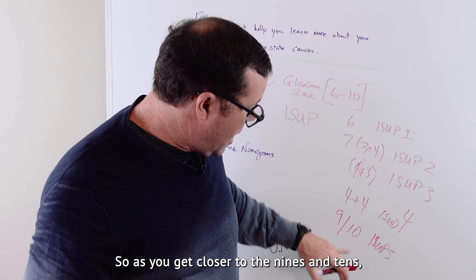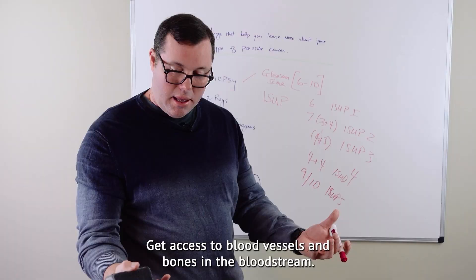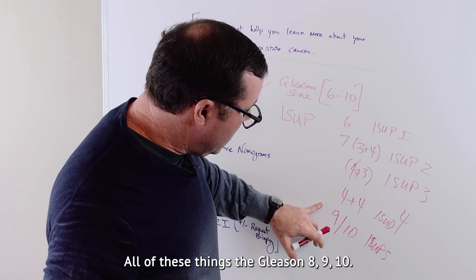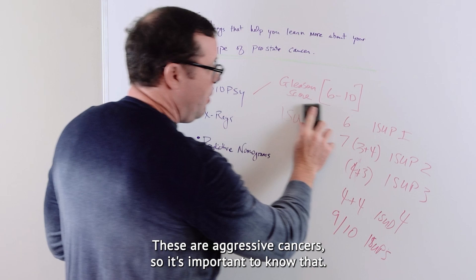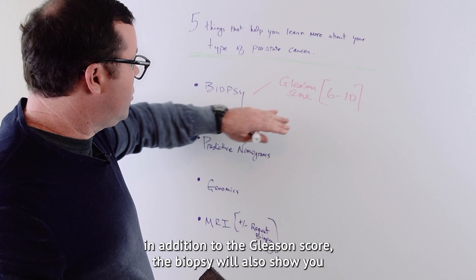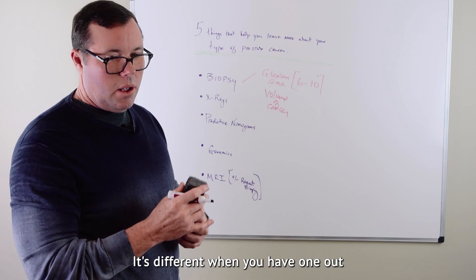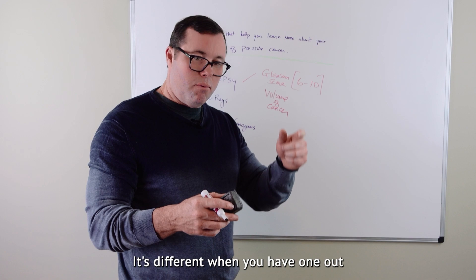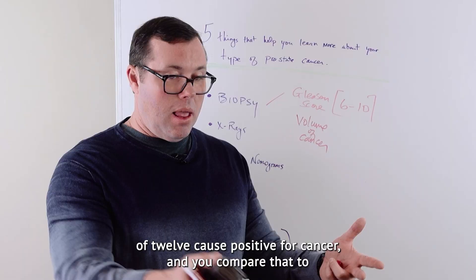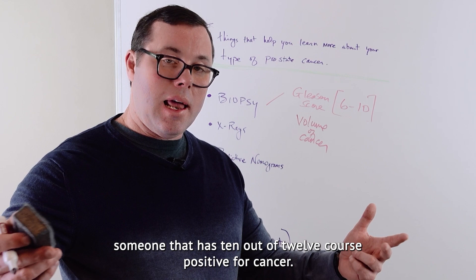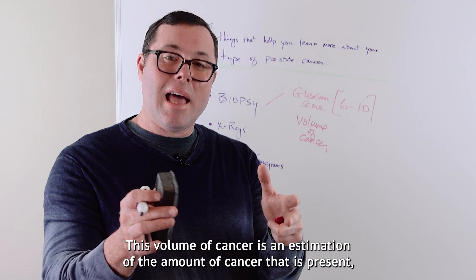So a lot of people don't even consider a Gleason score 6 to be a typical type of cancer. So as you get closer to 9s and 10s, these are very aggressive cancers. These are cancers that grow and invade structures, get access to blood vessels and bones and the bloodstream. All of these things, the Gleason 8, 9, 10, these are aggressive cancers. So it's important to know that early on. Now, in addition to the Gleason score, the biopsy will also show you the volume of cancer.